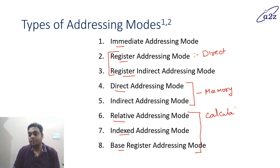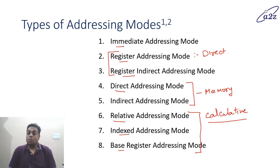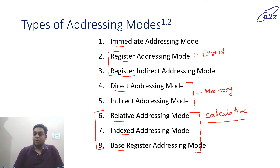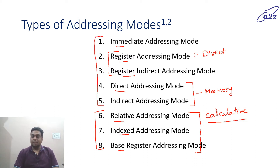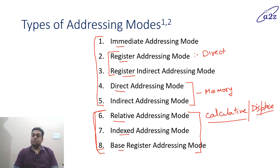Relative, indexed, and base are known as calculative addressing modes. They are called calculative because these three addressing modes are obtained after performing some calculation. The first five are the basic or base addressing modes, and these three are the calculative or displacement addressing modes. They are called displacement because we need some calculation to get the effective address of the operand.